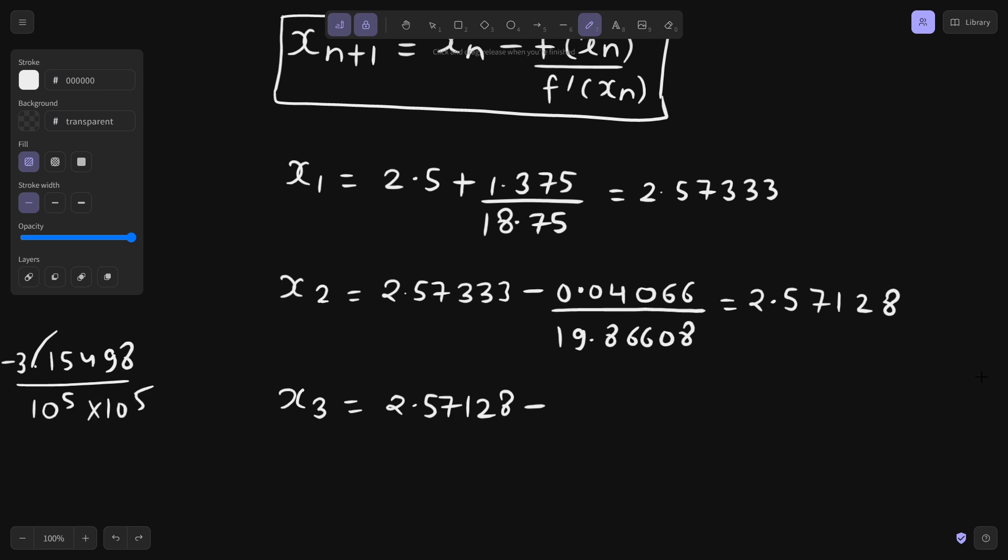This will be negative 0.0003, 4 zeros. And because we are writing only till 5 decimal places, roughly this will be the value. So plus 0.0003. It would have been 0.000315498, but I am writing only till 5 decimal places. So 4 0 and a 3.